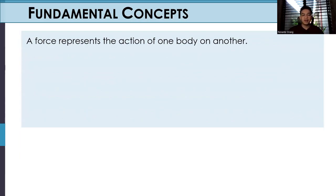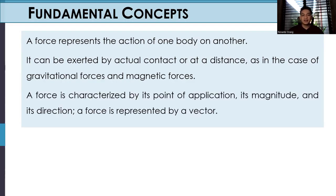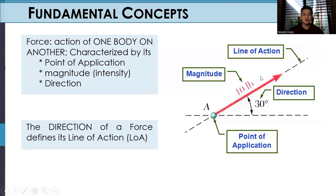Force represents the action of one body to another. It can be exerted by actual contact or at a distance, as in case of gravitational forces and magnetic forces. A force is characterized by its point of application, its magnitude, and its direction. A force is represented by a vector. Here, another diagram, force, action of one body on another. Characterized by its point of application, magnitude or intensity, and direction. We have the point of application, magnitude 10 pounds or for example 10 kilonewton, then the direction, 30 degrees from our x-axis, and we have our line of action. The direction of a force defines its line of action.